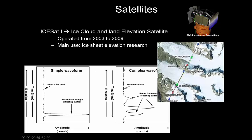A more complex waveform could be because you've got some topography even within the footprint of your beam — you might have a rock outcrop and maybe a crack in the ice, so you get a few peaks. This gives you a sense of the interpretation that is often required to turn these peaks into meaning: what are these peaks and what objects do they represent?